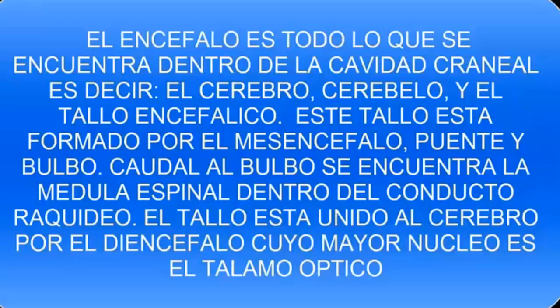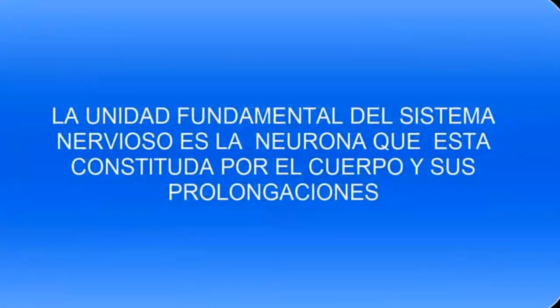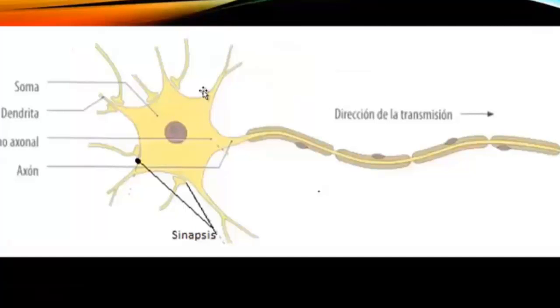We can also indicate that the fundamental physiological and anatomic unit is the neuron, which is made up of a body and two prolongations. The prolongations dendritic or afferent, and the only efferent prolongation is the cylindrical axle or axon.